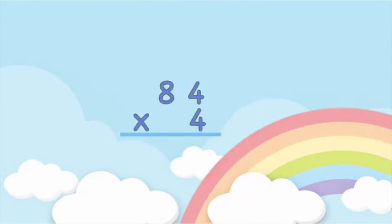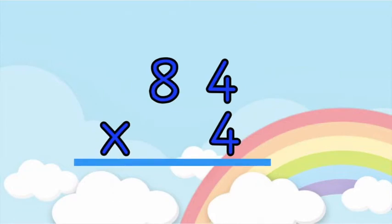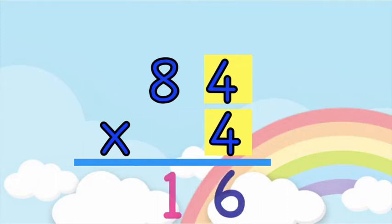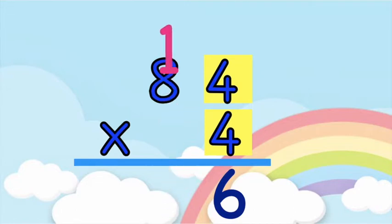How about if we have this: 84 times 4. Again children, let's multiply the second factor to the ones place. 4 times 4 — 4, 8, 12, 16. So 4 times 4 is equal to 16. Remember, you are allowed to write one digit at the bottom, so you are going to carry over the 1 at the top of the tens place.